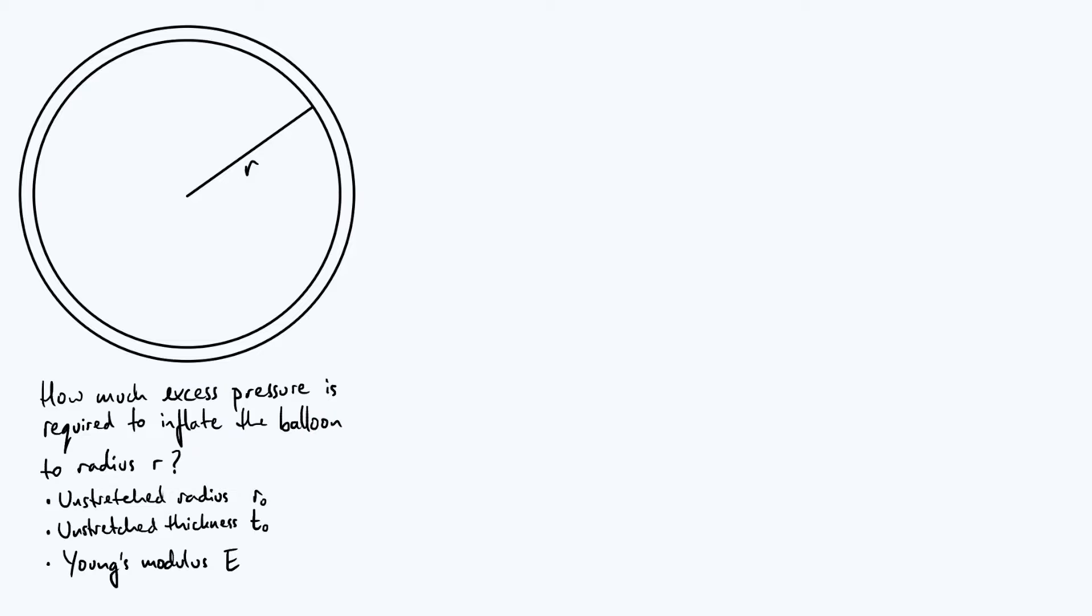We're going to assume that our balloon always keeps a spherical shape, and under that assumption we can specify the excess pressure required in terms of just a few parameters of the balloon. We've got what I've called the unstretched radius and the unstretched thickness. When I say unstretched, you have to imagine that you've put in just barely enough air to make the balloon keep a spherical shape without actually having the rubber material that it's made of stretch at all.